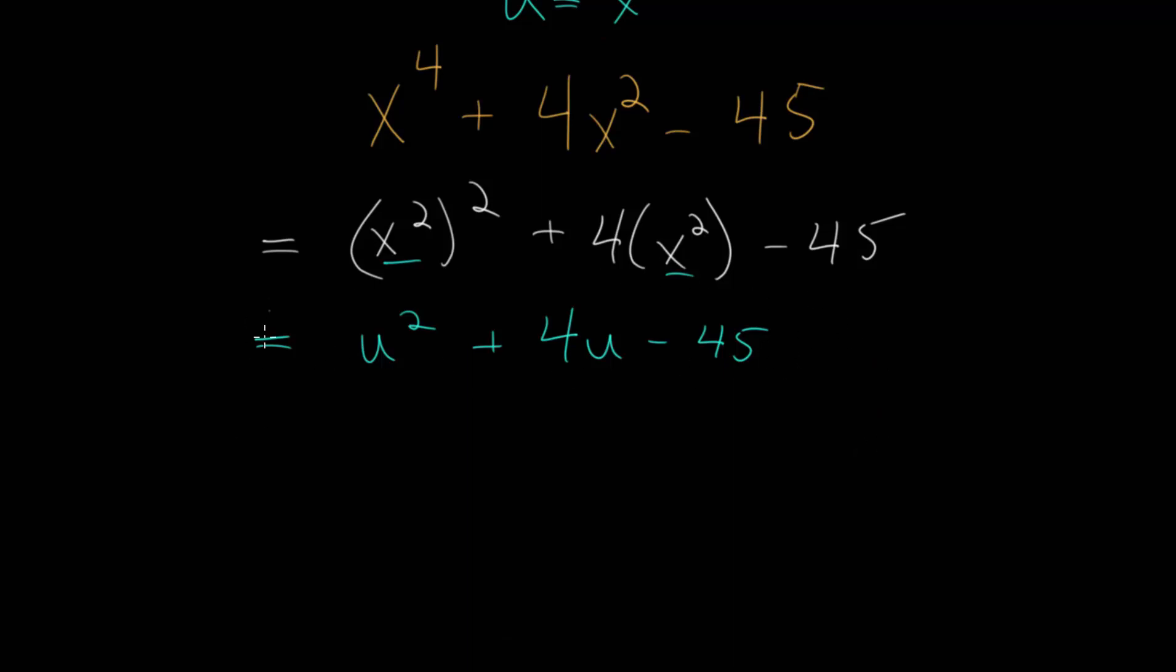Once we've converted this to a quadratic, we can just use those factoring techniques. This quadratic can be factored as a product of two binomials. If this doesn't work, we can always use the quadratic formula to figure out the factors.